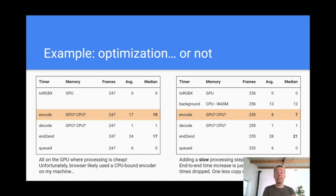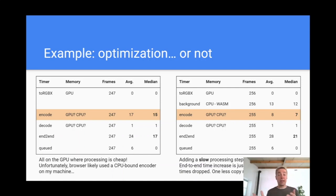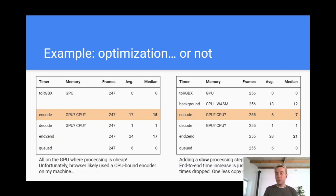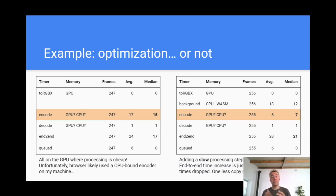WebAssembly is not slow per se, but it uses separate memory, so each video frame needs to be copied back and forth when WebAssembly is used to process it. That slow step takes 12 milliseconds, and yet it only increases the overall processing time by 4 milliseconds on my machine. Well, that's probably because the browser uses a video encoder bound to CPU memory, which incurs a costly memory copy when the video frame sits on GPU memory. The supposedly optimized workflow on the left turns out not to be super optimized in practice.